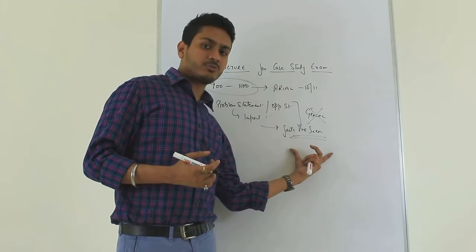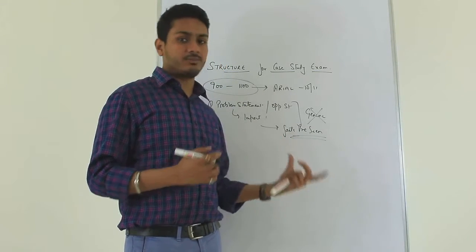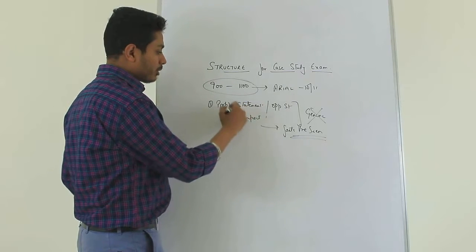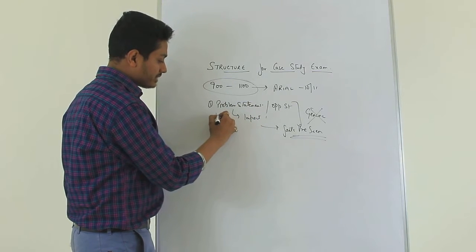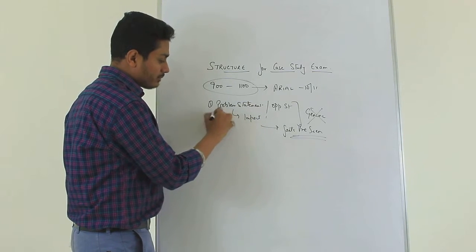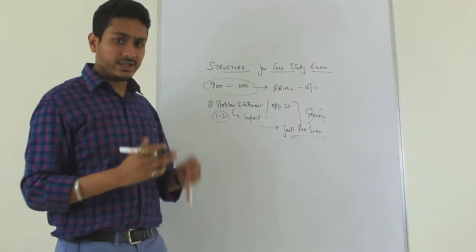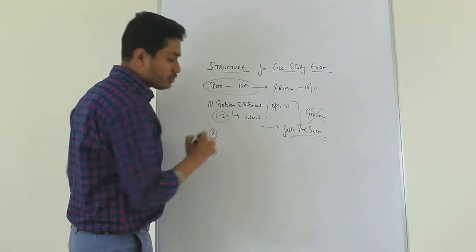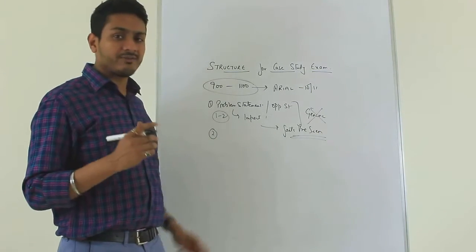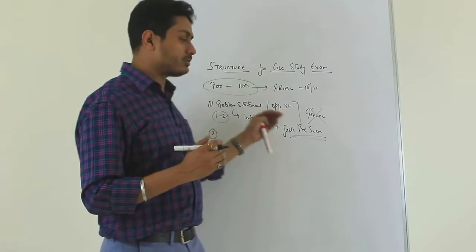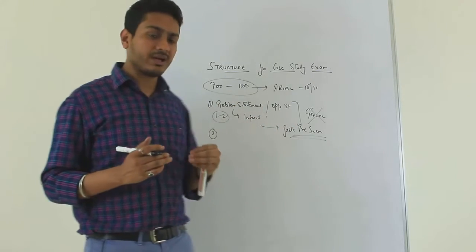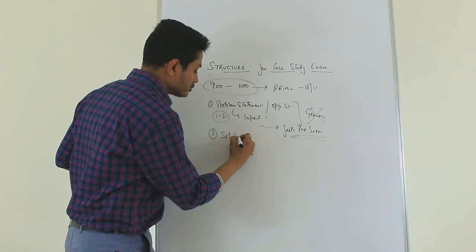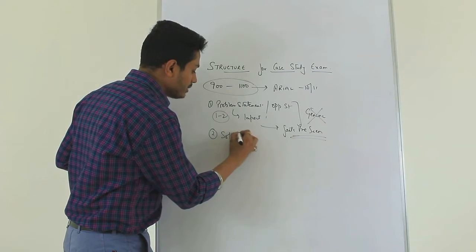Using facts from the pre-seen is very important. After you have done the problem statement and the impact — which could be one or two paragraphs — that is the starting point. The next element is that for every problem statement or opportunity statement and its impact, there will be different ways to address it. So what are the solutions you have to offer?